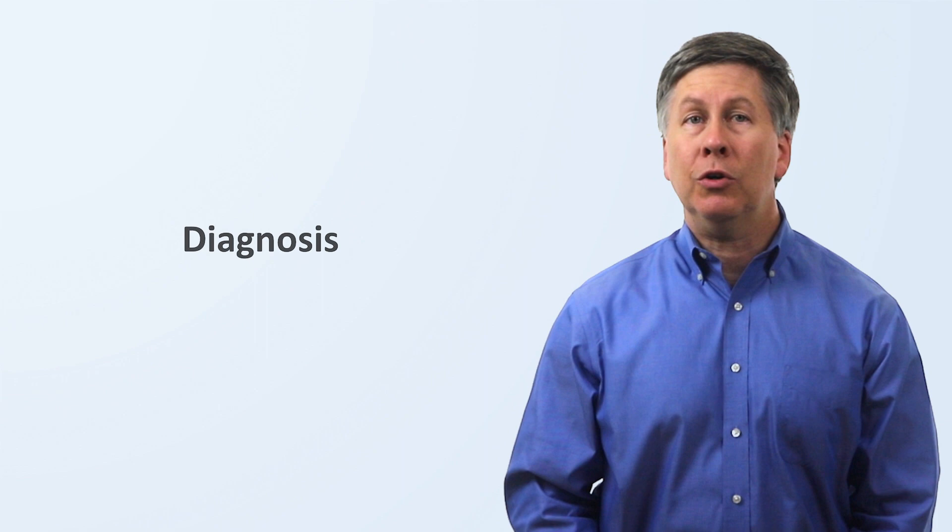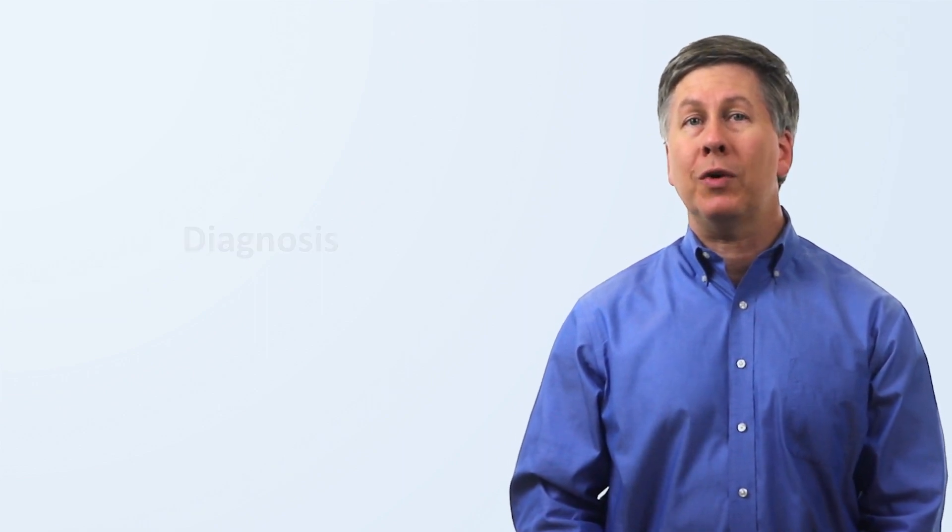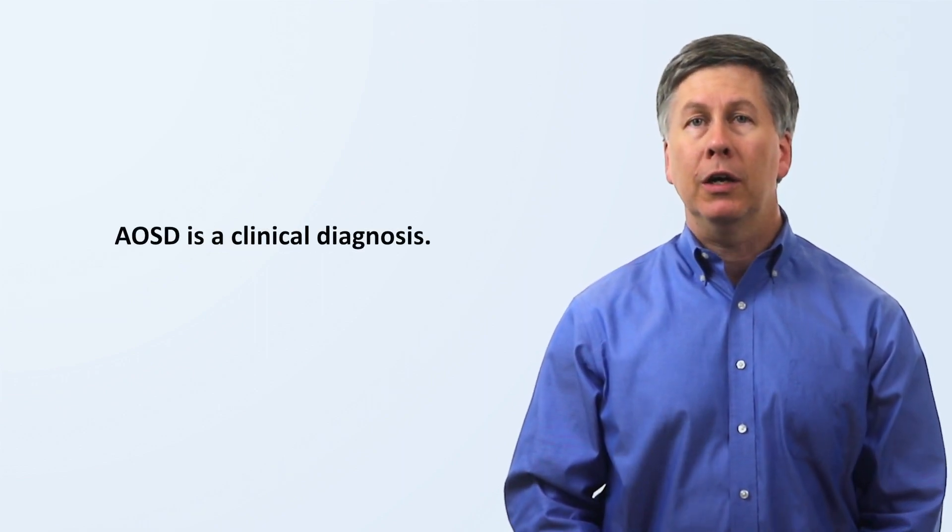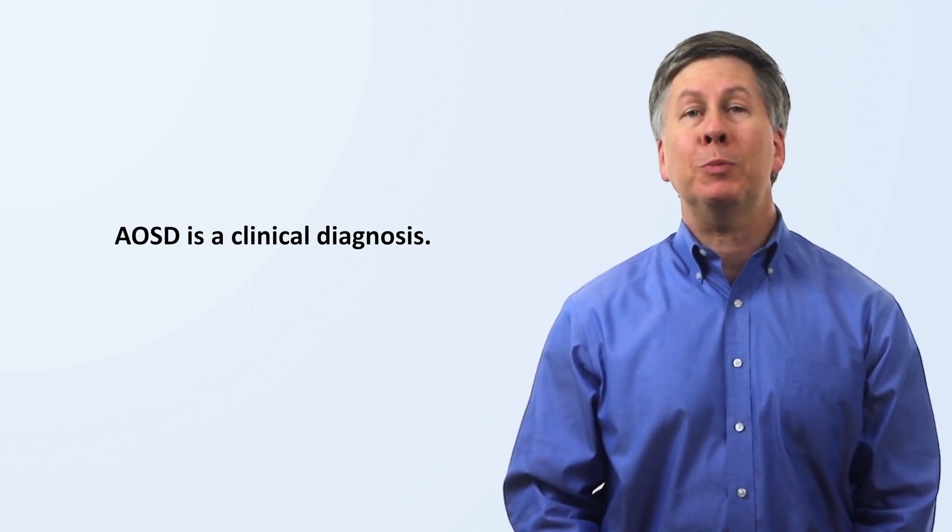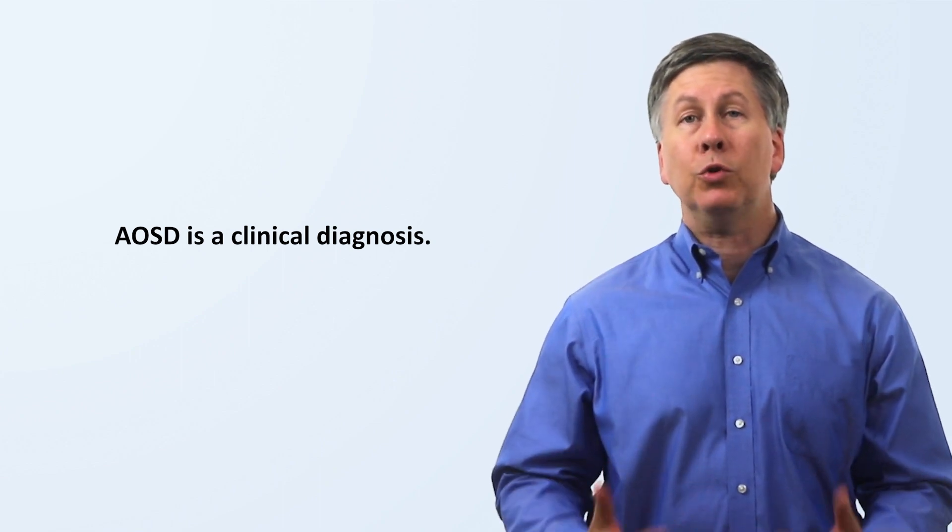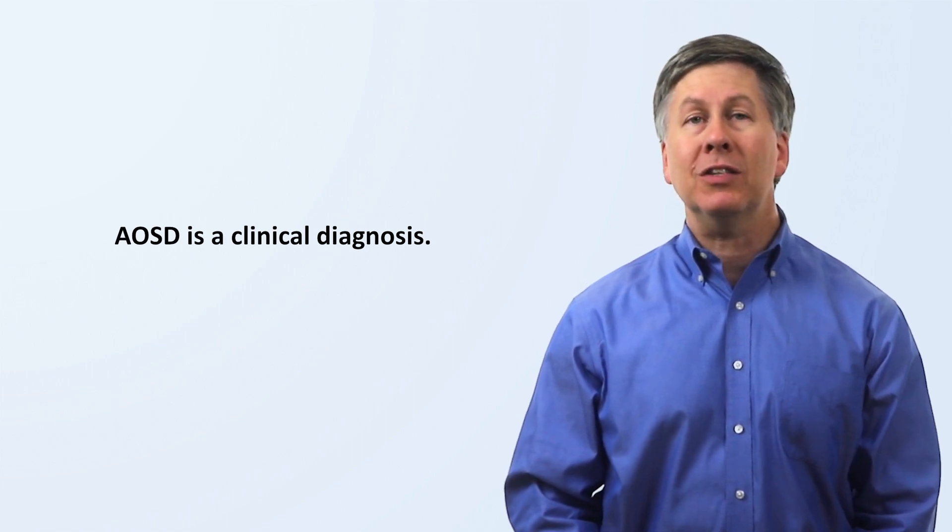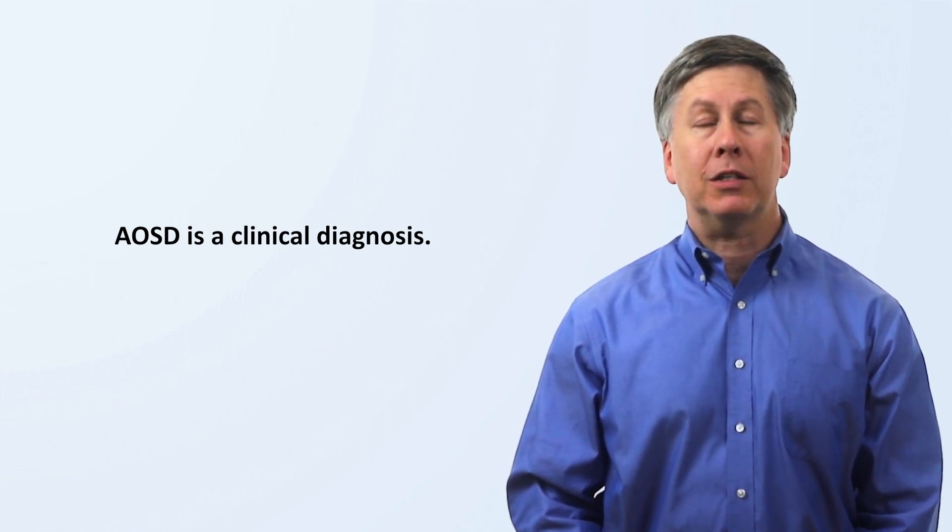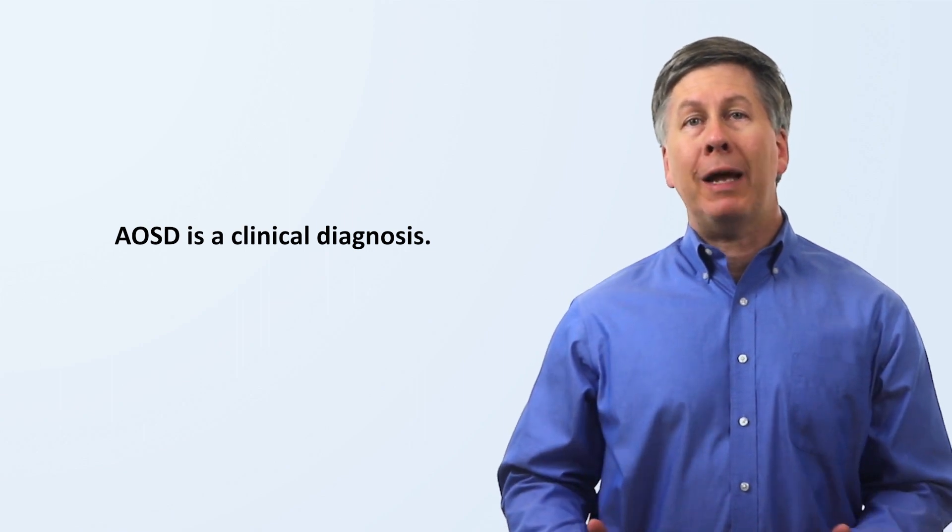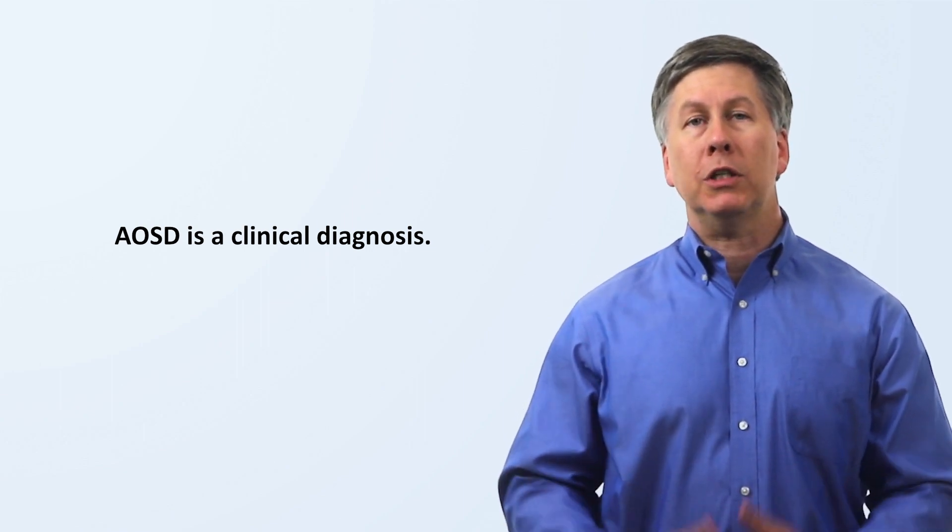When it comes to diagnosis, adult-onset Still's disease is what is known as a clinical diagnosis, meaning that there isn't any one specific diagnostic test that rules it in. Instead, diagnosis is based on a combination of consistent symptoms, exam findings, and lab abnormalities, as well as on the basis of ruling out other similar diseases.